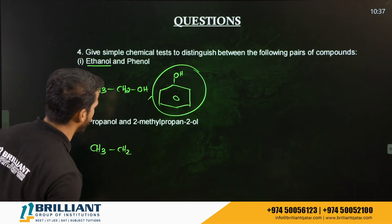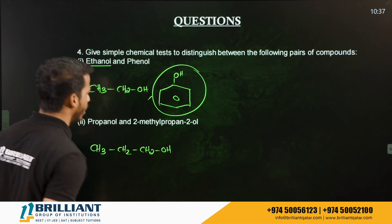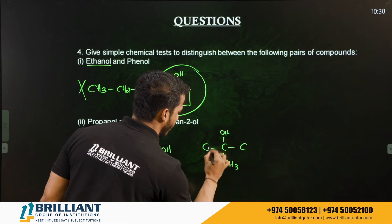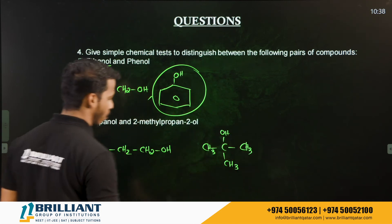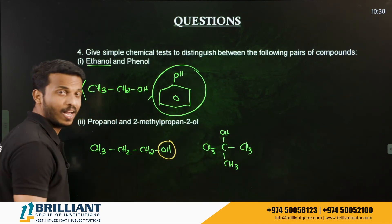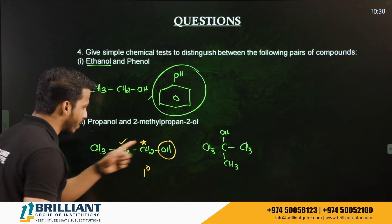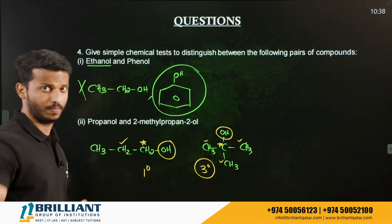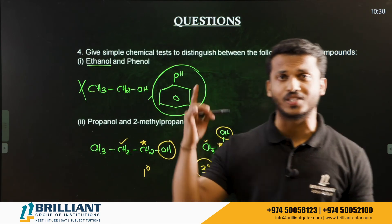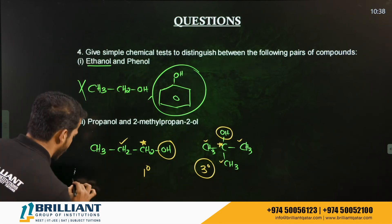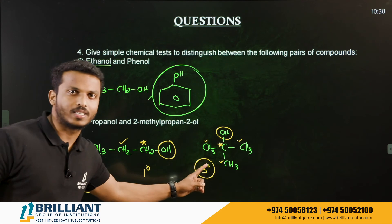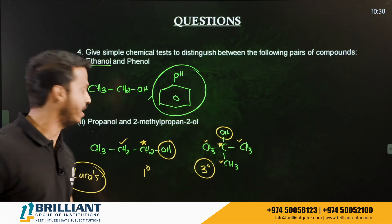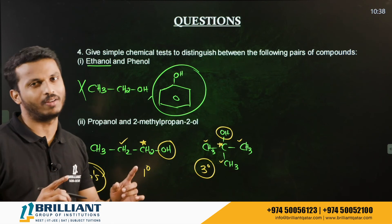Question: Distinguish between propan-1-ol (CH₃CH₂CH₂OH) and 2-methylpropan-2-ol. Propan-1-ol is a primary alcohol (OH-bearing carbon attached to one carbon), and 2-methylpropan-2-ol is a tertiary alcohol (OH-bearing carbon attached to three carbons). The Lucas test is used: tertiary alcohol gives immediate turbidity with Lucas reagent, while primary alcohol gives turbidity only on heating.